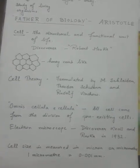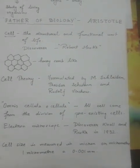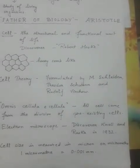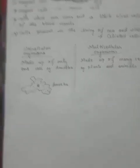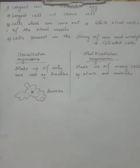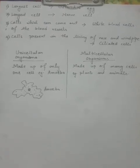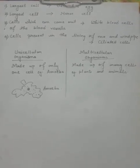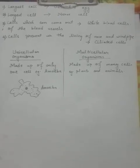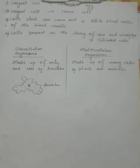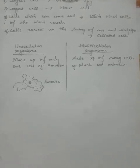The electron microscope was discovered by Noll and Ruska in 1932. Cell size is measured in microns or micrometers, where one micrometer equals 0.001 millimeters. The largest cell is the ostrich egg, the longest is the nerve cell, and the cell that can exit blood vessels is the white blood cell. Cells in the lining of the nose and windpipe are ciliated cells.